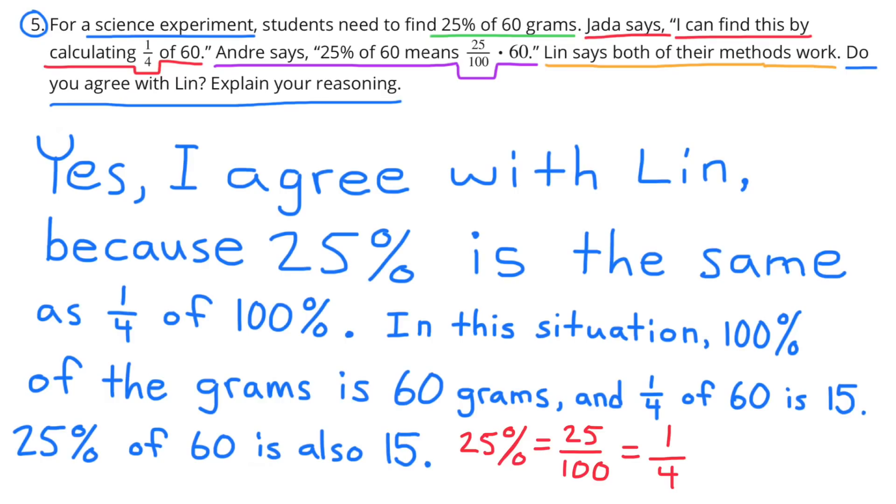Number 5: For a science experiment, students need to find 25% of 60 grams. Jada says, I can find this by calculating one-fourth of 60. Andre says, 25% of 60 means 25 over 100 times 60. Lin says both of their methods work. Do you agree with Lin? Explain your reasoning.